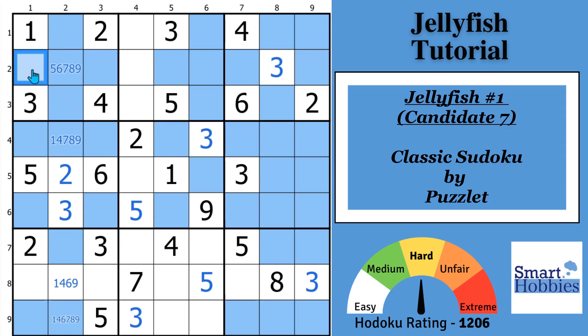Now look in column 1, where can a 7 be? It's in rows 2, 4, 6, and 9. I'll highlight those orange. Now look in column 3. You may notice 3 of the 4 same rows. And then the same thing here in column 5. And then you go back here to column 7. And it's the same 4 rows as column 1. You'll notice in columns 1, 3, 5, and 7, the 7s are restricted to the same 4 rows. Rows 2, 4, 6, and 9. We have found ourselves a Sudoku jellyfish.